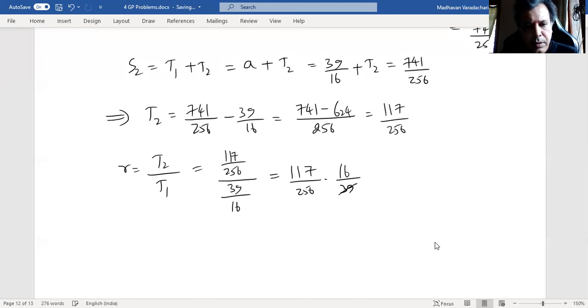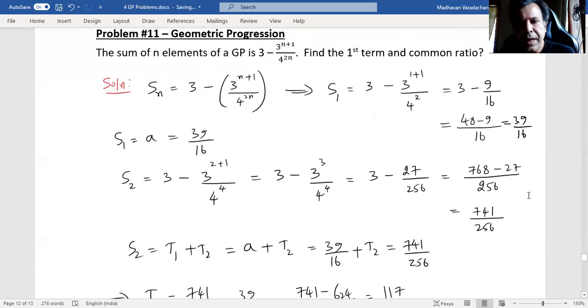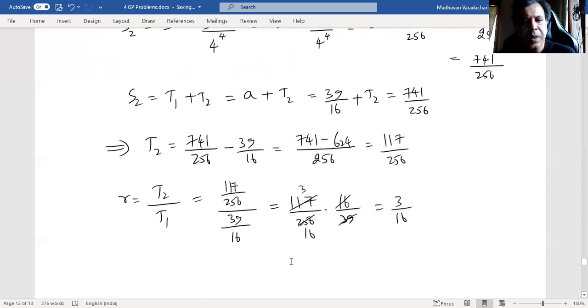This goes 3 times, this goes 16 times, so the result is 3 by 16. So our common ratio is 3 by 16, and our first term is 39 by 16. So that will be the solution for this particular problem.